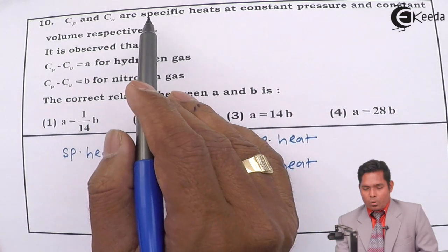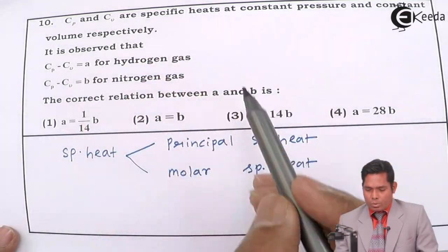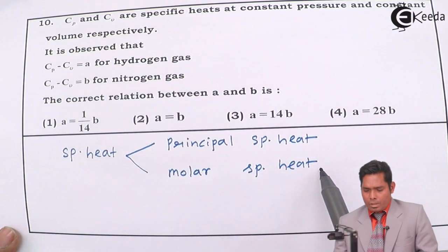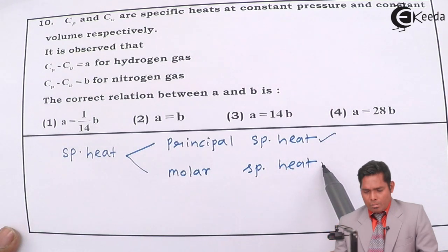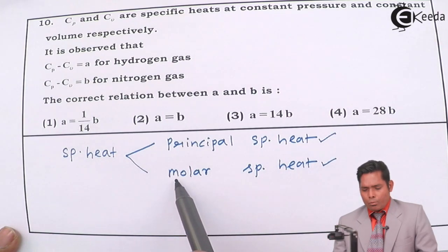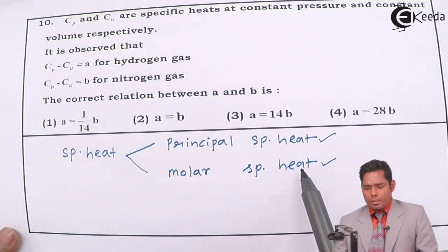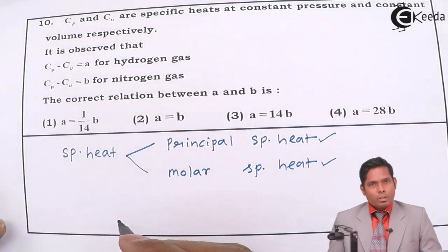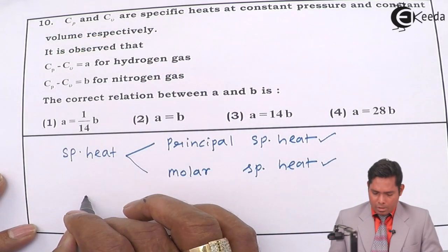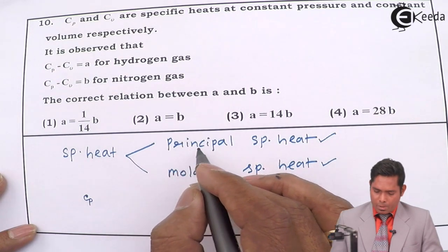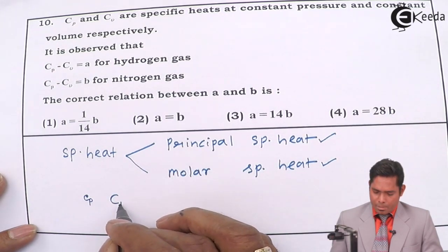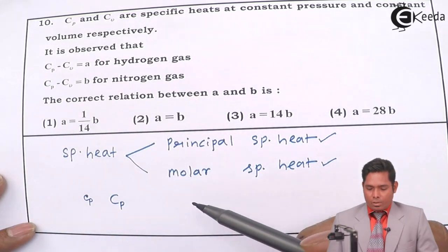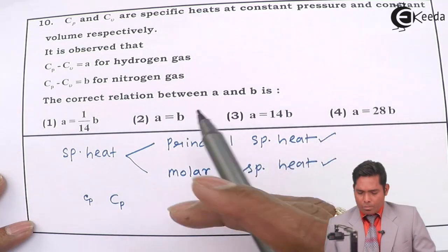So if you consider that only specific heat is given, you can take any one of the two, but most probably in your exam you should go for molar specific heat. Because in most textbooks it is written that if you write small Cp then it is called principal specific heat, if you write capital Cp then it is molar specific heat. Accordingly you have to answer, otherwise it has two answers. So let us solve for both.